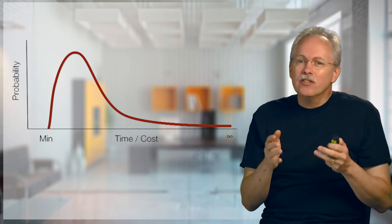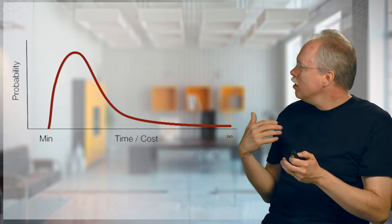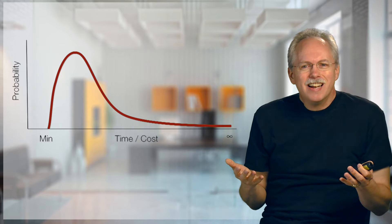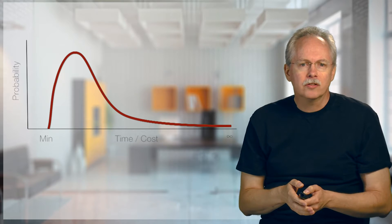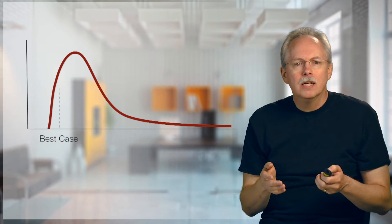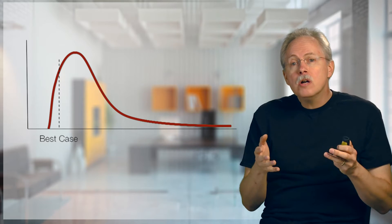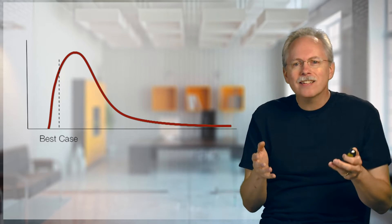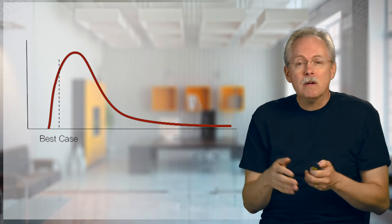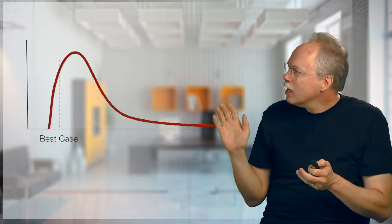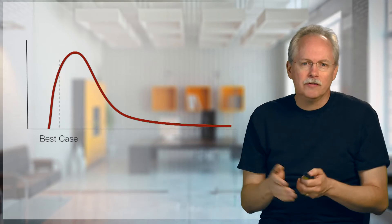If someone asks what's your estimate and you give them this whole curve, they're not going to be very excited about that. So we tend to pick several points on this curve. We pick points like the best case. This is where most people typically estimate if you ask them for a single point estimate. One that has very little probability of coming true. If you think about the area under the curve, there's not much of it there.